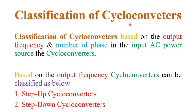Now, classification of cycloconverters. There are two classifications. First, cycloconverters can be classified based on their output frequency. Second, cycloconverters can be classified according to the number of phases in the input AC power.